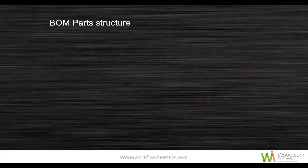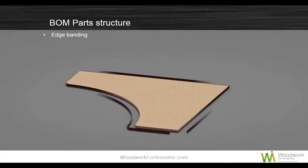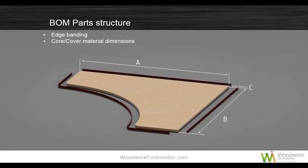A lot of companies use Excel spreadsheets, Word documents, or some digital template to pull around the office. That information can contain a lot of part structure information — edge banding information. We need a way of extracting that information from the model, including things like the oversize. Some companies will want to add the material to the overall size; others will want to remove it. We need something flexible enough to report on this.